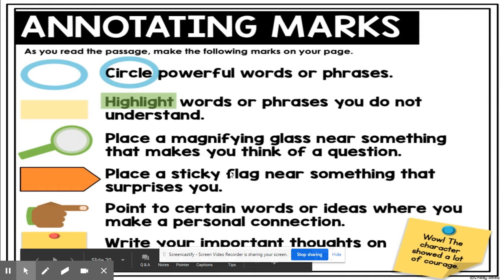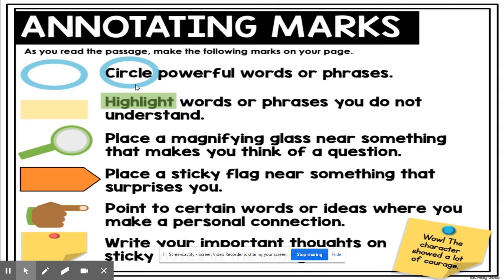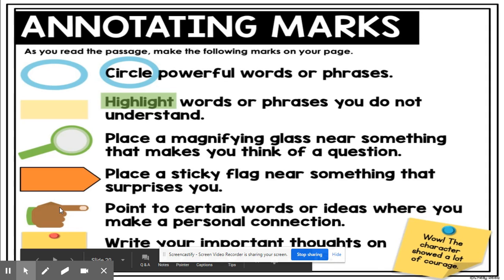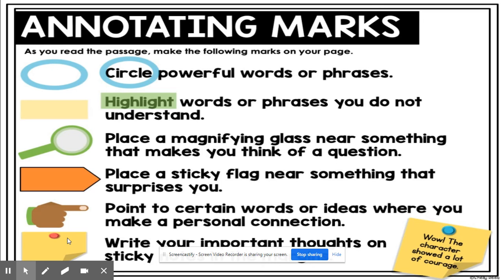As you're silent reading the first time, you will make some marks on your page. You will circle powerful words or phrases, highlight words or phrases you don't understand, and place this magnifying glass near something that makes you think of a question. You can place a sticky flag near something that surprises you, use a pointer for a personal connection, and use this post-it to write important thoughts. These are called annotating marks — you can drag them, highlight, and move them over specific parts of the text.